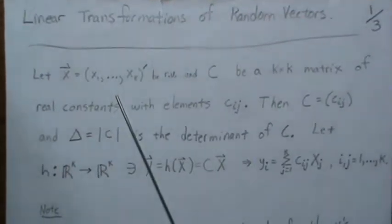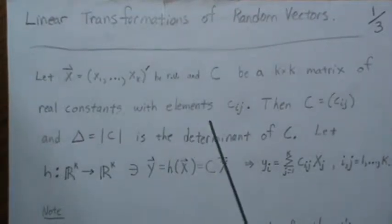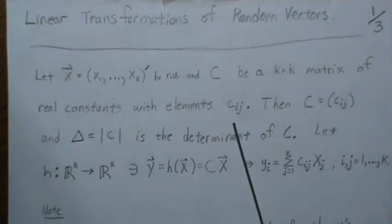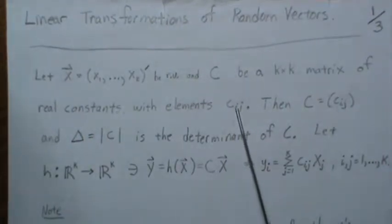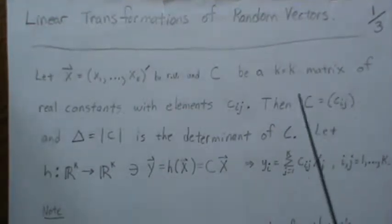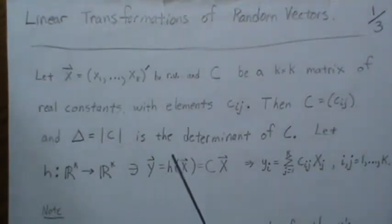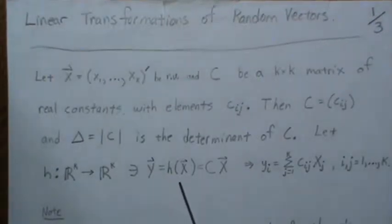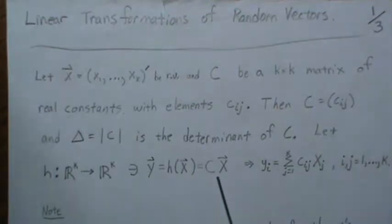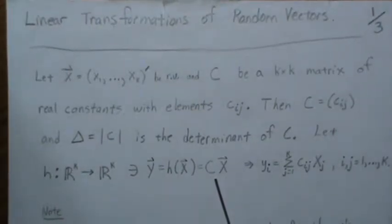Let X be a k-dimensional random vector and C be a k-by-k matrix of real constants. The elements of the C matrix can generically be represented by C_ij, where that's the ith row and the jth column. We'll let delta be the determinant of C, and let H be this transformation from k-space to k-space such that Y equals C times X. This is called a linear transformation.